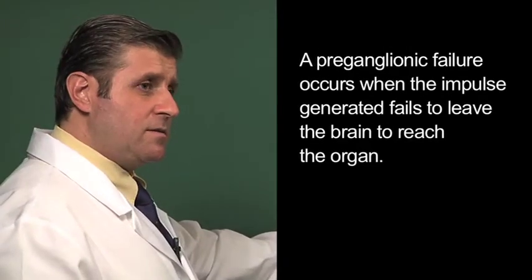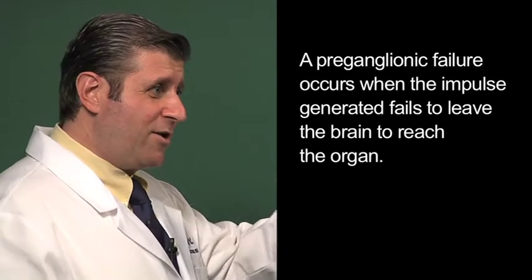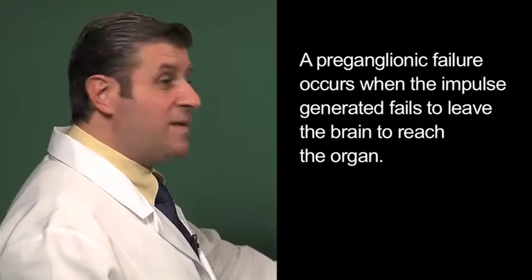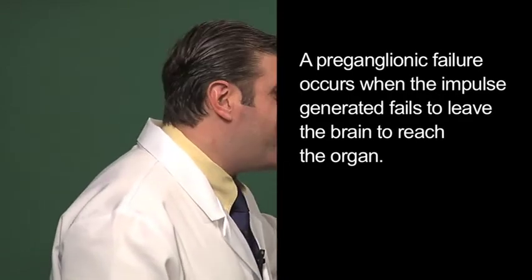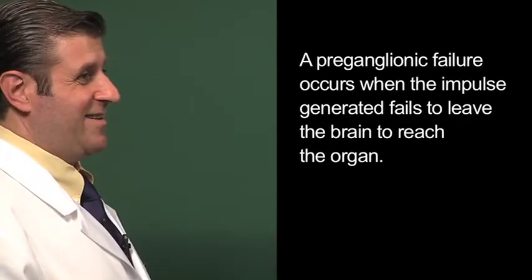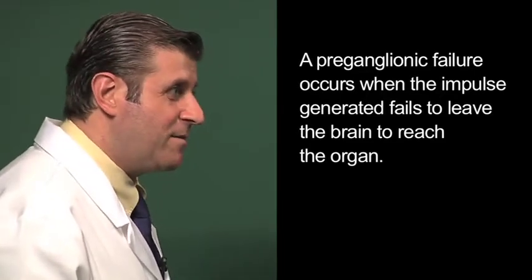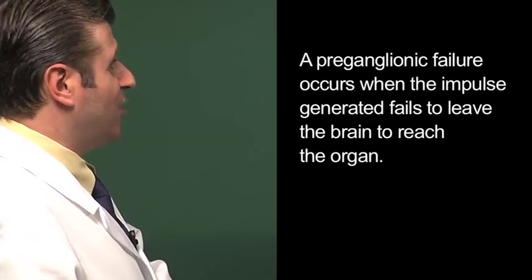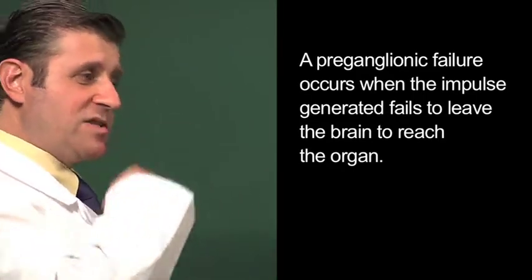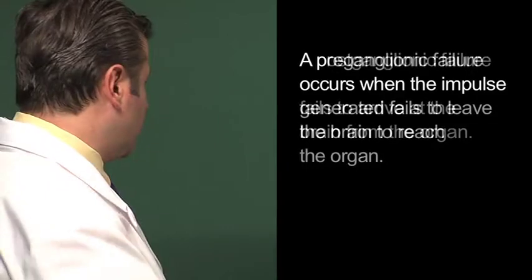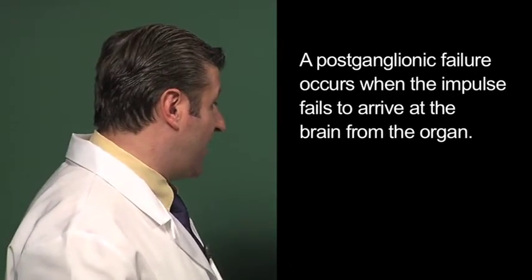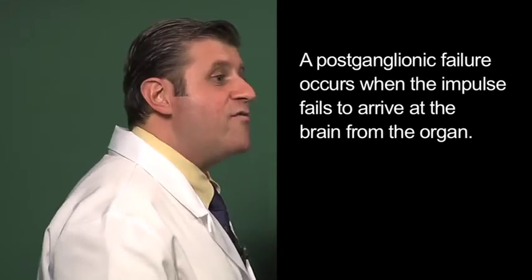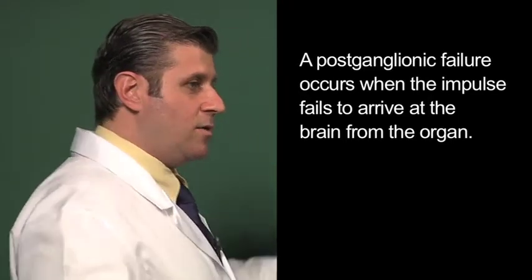What's happening here? A preganglionic failure. Remember these two words? Preganglionic, postganglionic. One, a preganglionic failure occurs when the impulse generated fails to leave the brain to reach the organ. That is important. Profound. Preganglionic. My brain is not firing to my organ. It's not firing to that booster station and the booster station is not able to read the signal. A postganglionic failure occurs when the impulse fails to arrive at the brain from the organ. So there is a two-way street. Complex stuff, isn't it? But beautiful. If it's working right, you enjoy life.